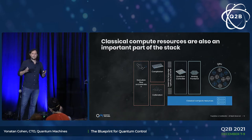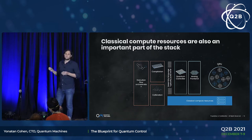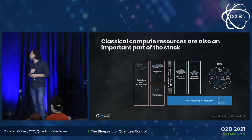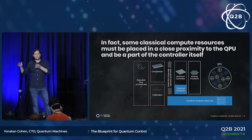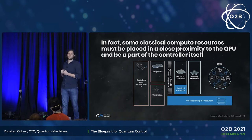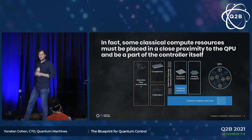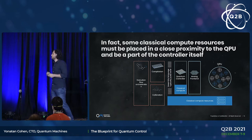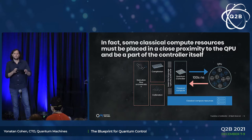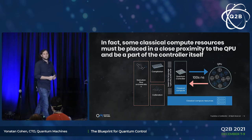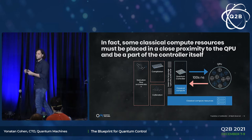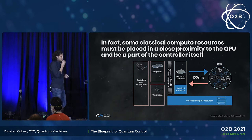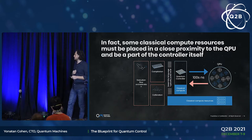Another very important part of the stack is classical computer resources, because almost any application — and also calibrations — need to rely heavily on classical processing. It's also very important to have classical compute resources very close to the QPU, and even inside the quantum controller itself. This is something Quantum Machines pioneered with our unique pulse processor architecture. These are classical processing tasks that need to happen in real time with precise timing control on the nanosecond level, allowing things like mid-circuit measurements with feedback-based response, with feedback latencies on the order of hundreds of nanoseconds.